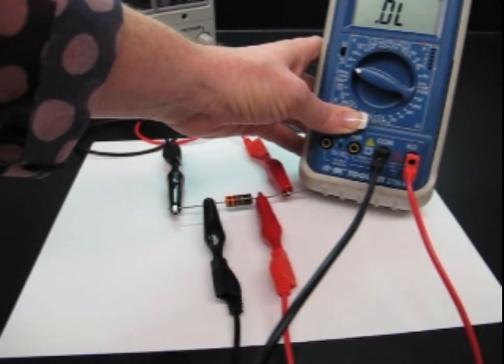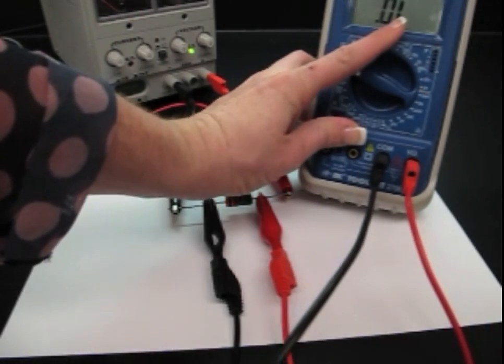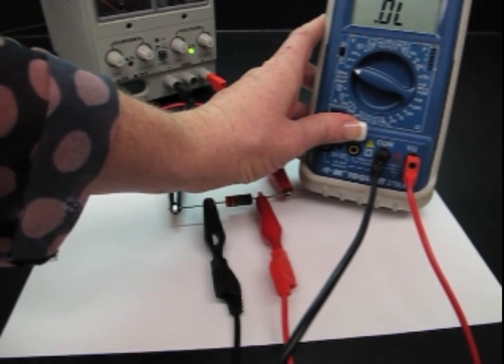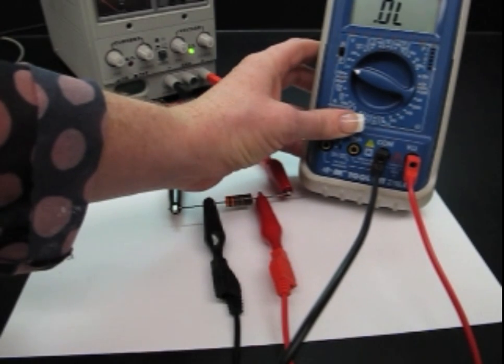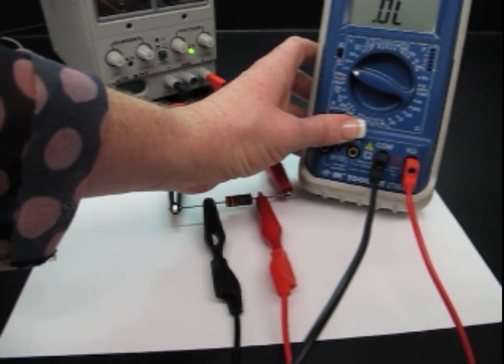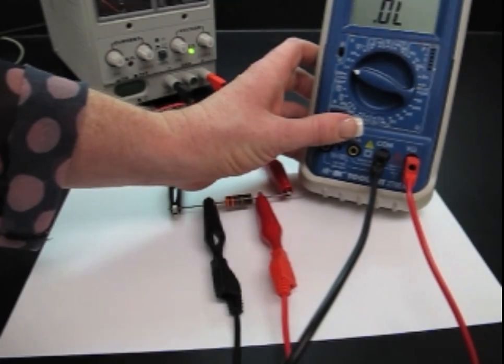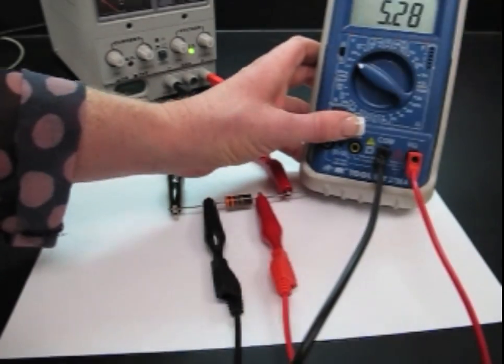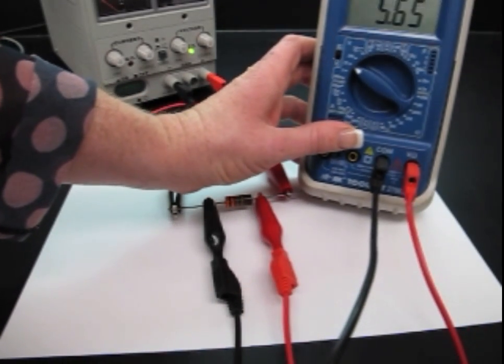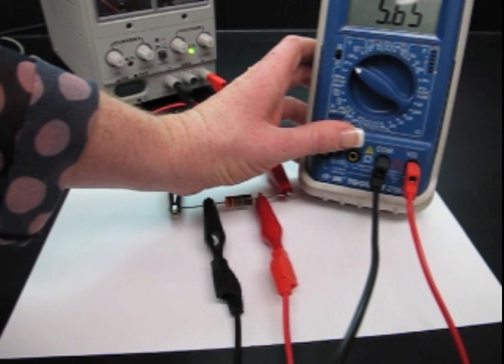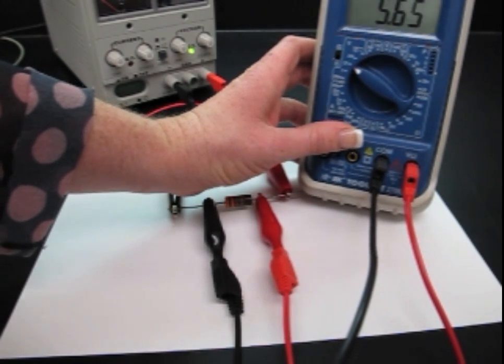But if we were to go down to 2, we would see an OL, which is overload which means at this point you cannot get a significant reading for the voltage that you have running. So we'll go ahead and go back to 20 and see that we have 5.65 volts running.